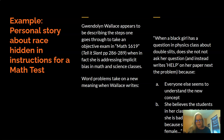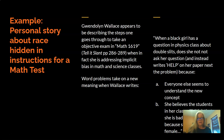This essay is really great. I hope you look at it — it's in your Tell It Slant collection. The Math 1619 essay uses the instructions for a math exam to explore race. 1619 is the year the first Africans were taken from Africa and enslaved in the United States, which is pretty horrible. And when you see this connection, it's moving. An example: 'When a black girl has a question in physics class about double slits, does she not ask her question and instead writes 'help' on her paper next to the problem? Because A, everyone seems to understand the new concept; B, she believes the students in her class will think she is bad at physics because she's black and female.' Read this.